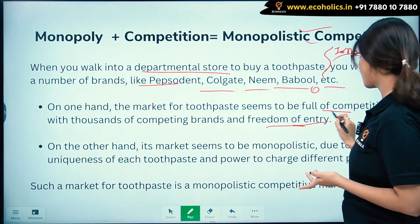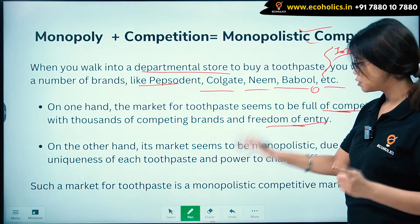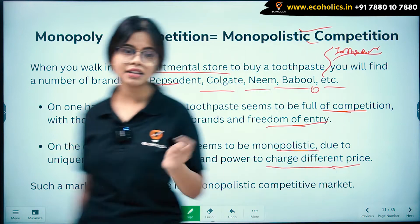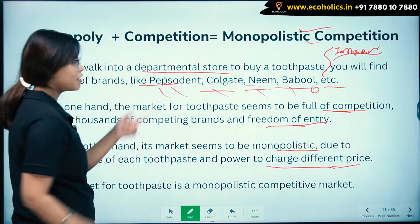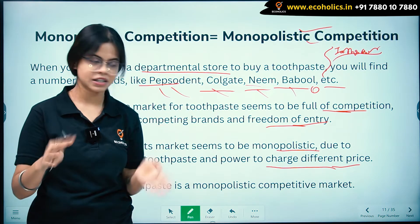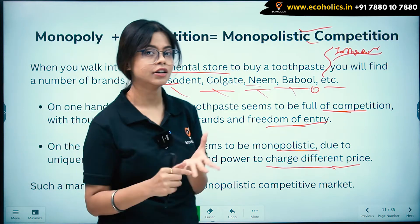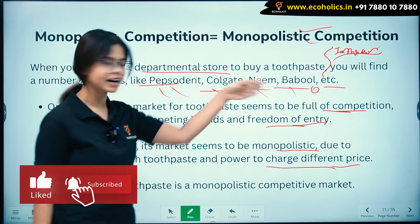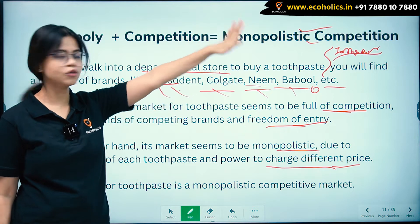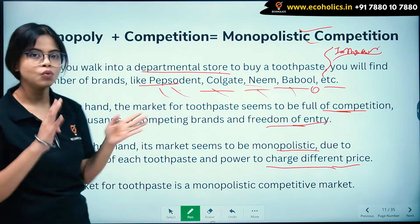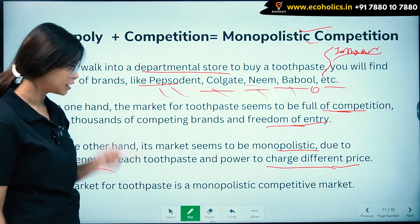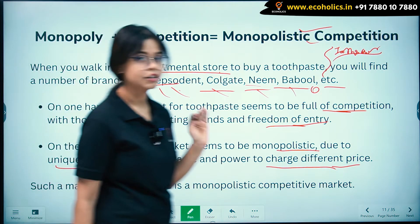On the other hand, the market seems more monopolistic due to the uniqueness of each toothpaste and the power to charge different prices. Each toothpaste has something unique — neem power, visible white, or some other feature. So Colgate has one price, Pepsodent another, Neem another. The sole reason firms charge different prices is product differentiation — there is something unique about each toothpaste.